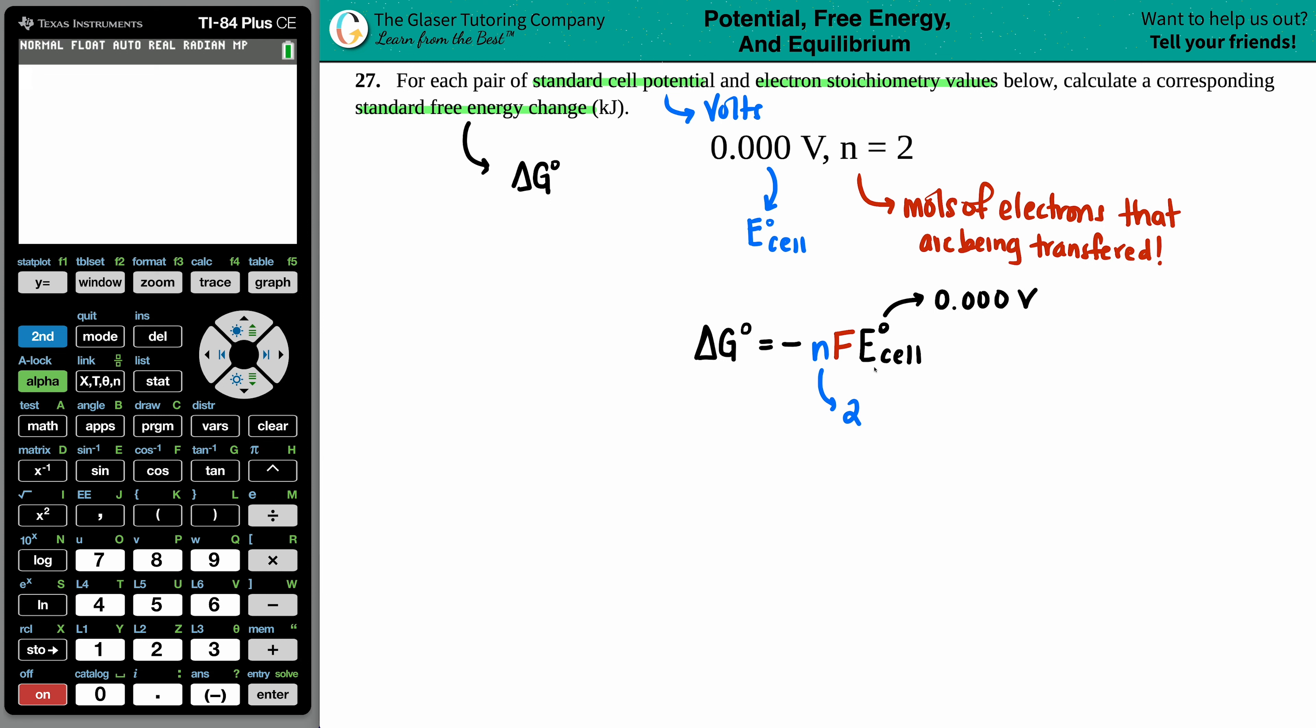Now the F value is Faraday's constant. And by what it says, that's a constant number. If you want to know the number, it's always going to be 96,485. The units for Faraday's constant is always coulombs per mole.